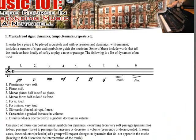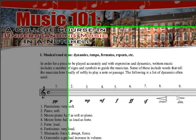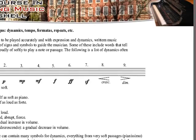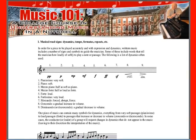And here it gives the symbols. Pianissimo is very soft — two P's. One P is soft, medium soft, medium loud, loud, very loud, forzando, suddenly loud, crescendo and diminuendo — getting louder, getting softer — those kinds of things that piano players need to know in addition to the notes.